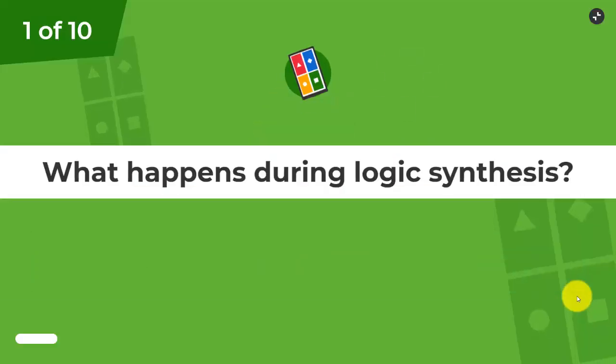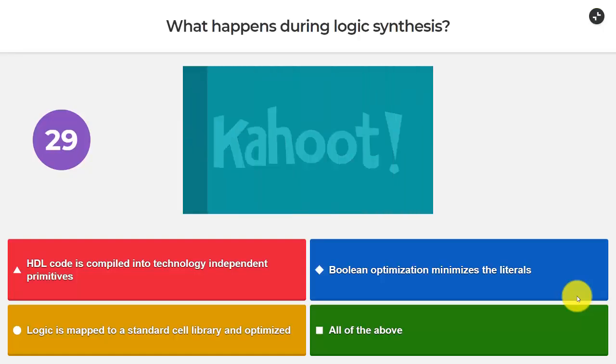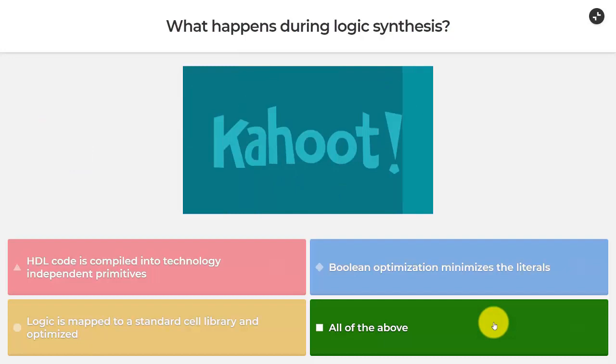So today we have 10 questions for you starting with: what happens during logic synthesis? HDL code is compiled into technology-independent primitives. Boolean optimization minimizes literals. Logic is mapped to a standard cell library and optimized. Maybe it's the last one, all of the above.